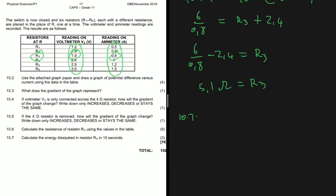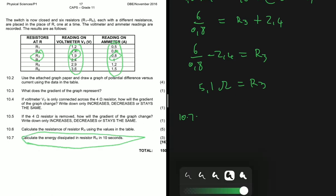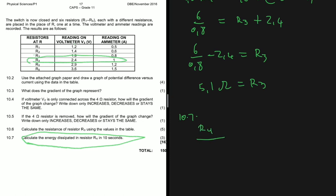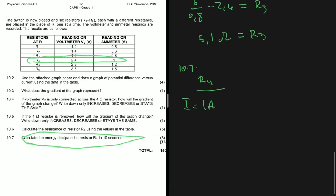Now let's find the energy dissipated in resistor R4 in 10 seconds. Looking at the table for R4: the voltmeter reads 2.4 V and the ammeter reads 1 amp. To calculate the energy, we know that P equals work divided by time, so the energy W equals power multiplied by time. To calculate power we need at least two quantities from V, I, and R. In series, VT equals V1 plus V2 and so on. The battery provides a voltage of 6 volts.